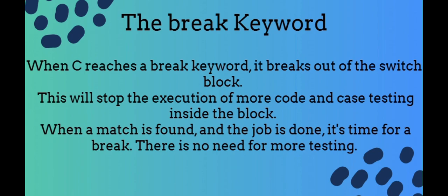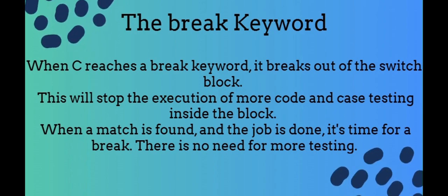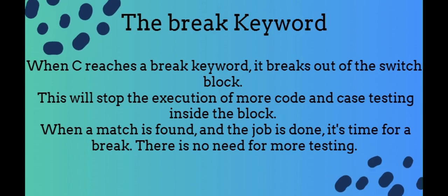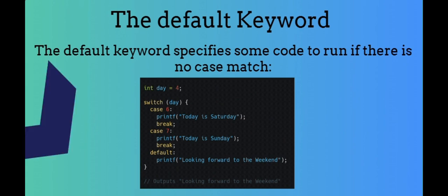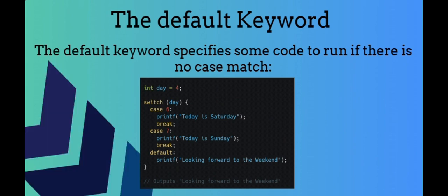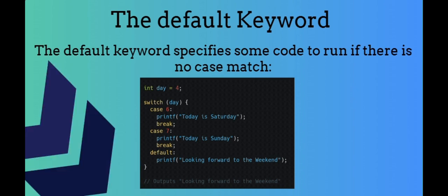The break keyword. When C reaches a break keyword, it breaks out of the switch block. This will stop the execution of more code and case testing inside the block. When a match is found and the job is done, it's time for a break — there is no need for more testing. A break can save a lot of execution time because it ignores the execution of all the rest of the code in the switch block. The default keyword specifies some code to run if there is no case match. Note that the default keyword must be used as the last statement in the switch, and it does not need a break.